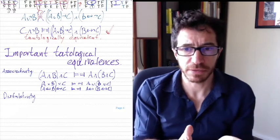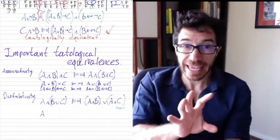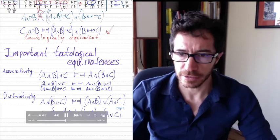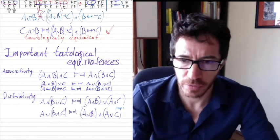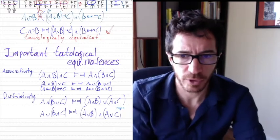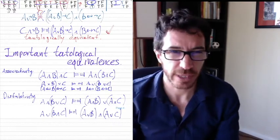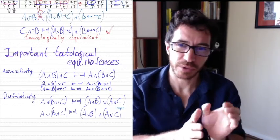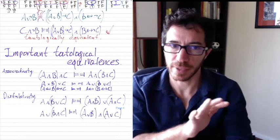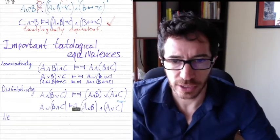Then come the distributivity laws, analogous to distributivity for arithmetic. We can distribute 'and' over 'or' and 'or' over 'and' — both directions work. So A and (B or C) splits into (A and B) or (A and C), and A or (B and C) splits into (A or B) and (A or C). Unlike arithmetic, both distributions are valid here. Try the truth tables to verify.